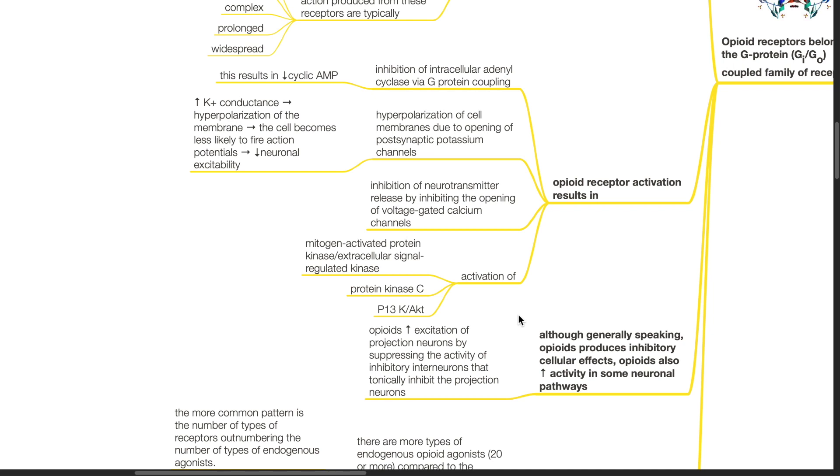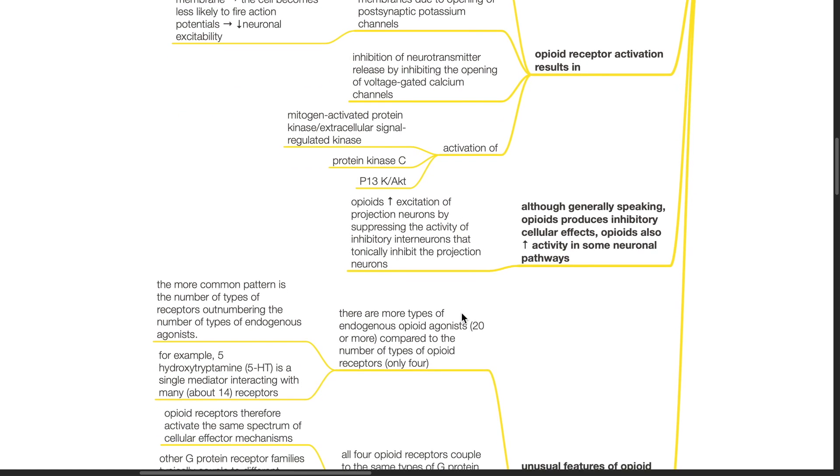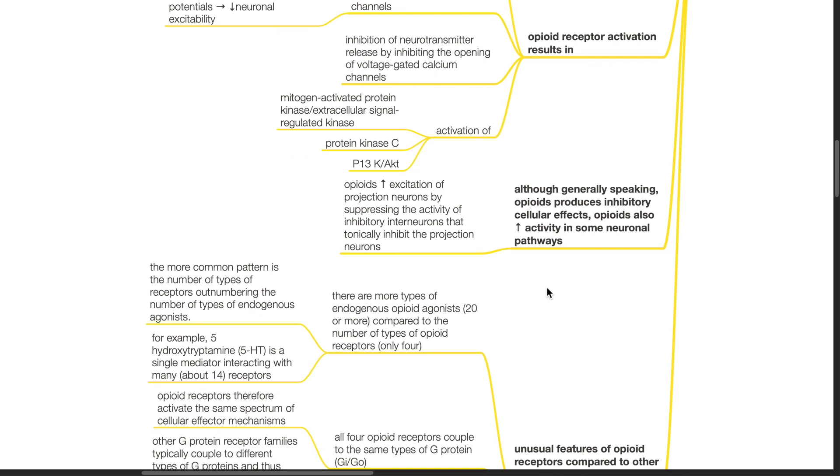Other actions include activation of mitogen-activated protein kinase, extracellular signal-regulated kinase, protein kinase C, and PI3K-AKT. Although generally speaking, opioids produce inhibitory cellular effects, opioids also increase the activity of some neuronal pathways. Opioids increase excitation of projection neurons by suppressing the activity of inhibitory interneurons that tonically inhibit the projection neurons.